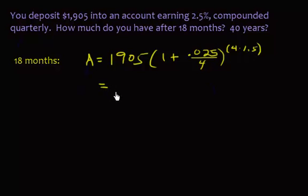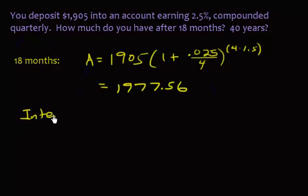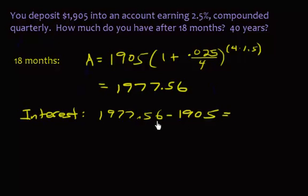Plugging that into the calculator gives $1,977.56. If you also want to know how much interest you earned, you subtract the starting balance from the ending balance: $1,977.56 minus $1,905.00 equals $72.56 in interest earned over the 18-month period.